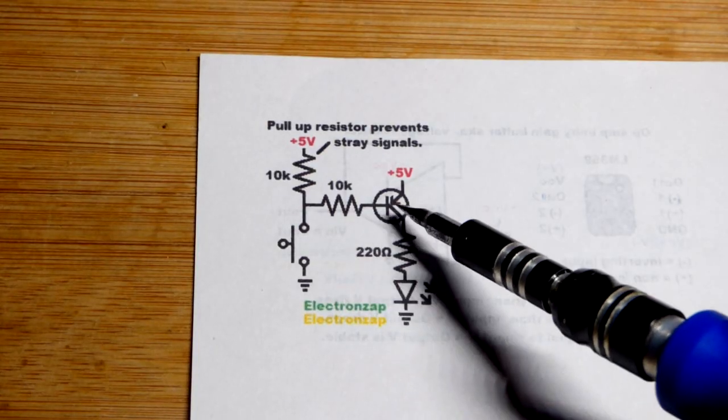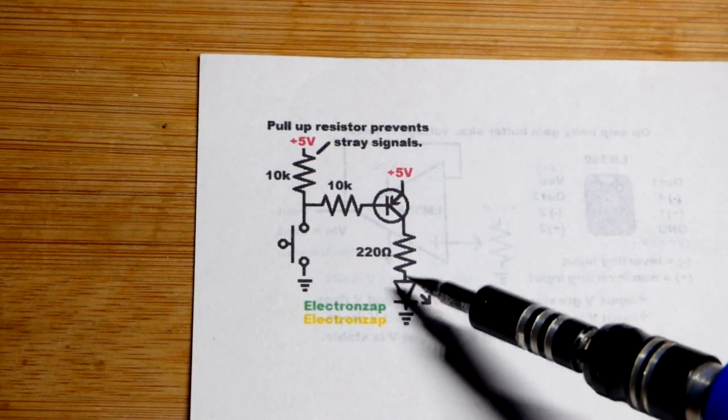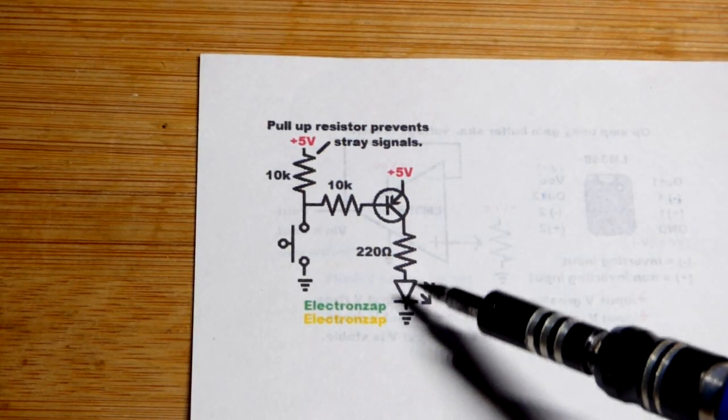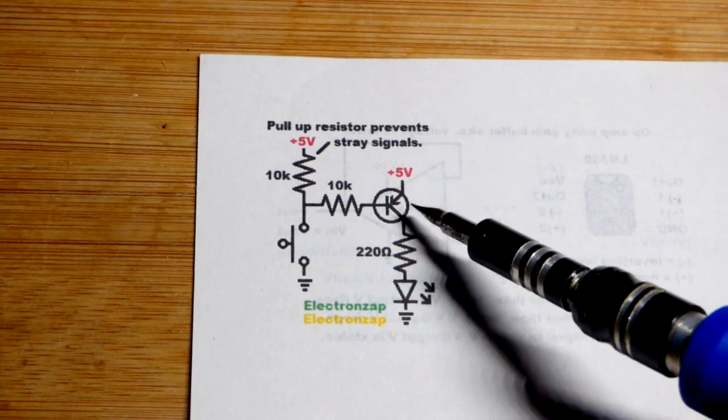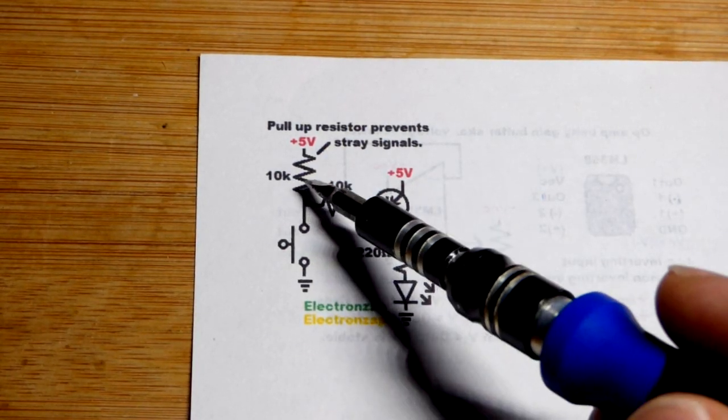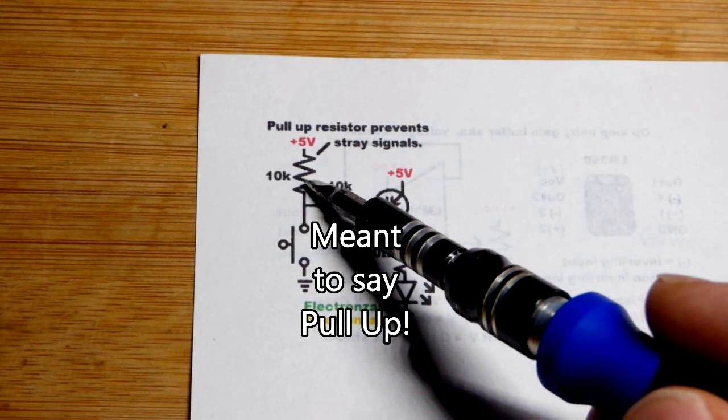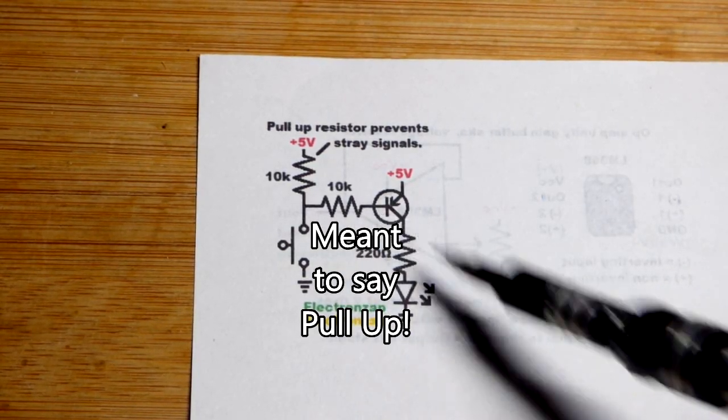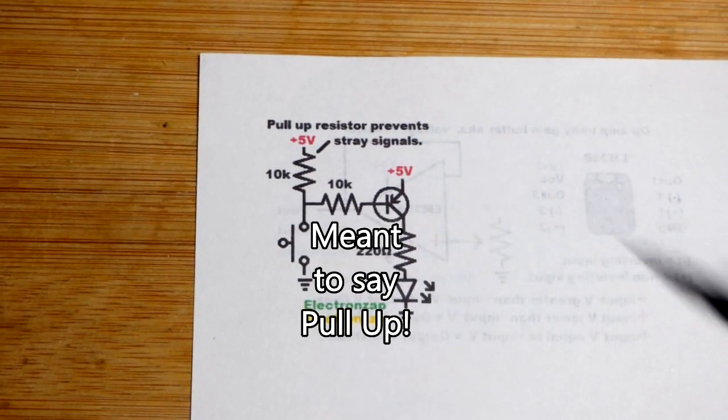So a lot of times that's not a problem if it kind of turns on a little bit. In this case, the LED would kind of glow a little bit. But you may have circuitry that needs to be off solidly, and therefore you just use a pull-down resistor that is strong enough to keep it off fully. Probably 10k will work just fine.